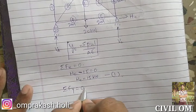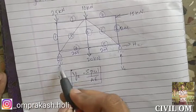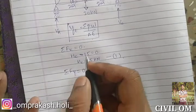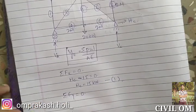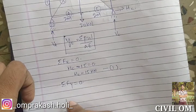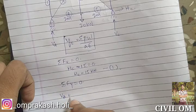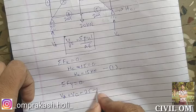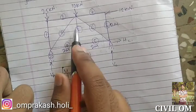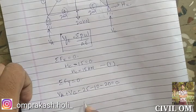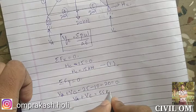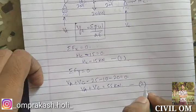Now let us consider summation of FY equal to 0. We have VA, VC, 10, and 25. Arranging them systematically, the equation is VA plus VC minus 25 minus 10 minus 20 equal to 0. VA plus VC equals 55 kilonewton. This is our second equation.